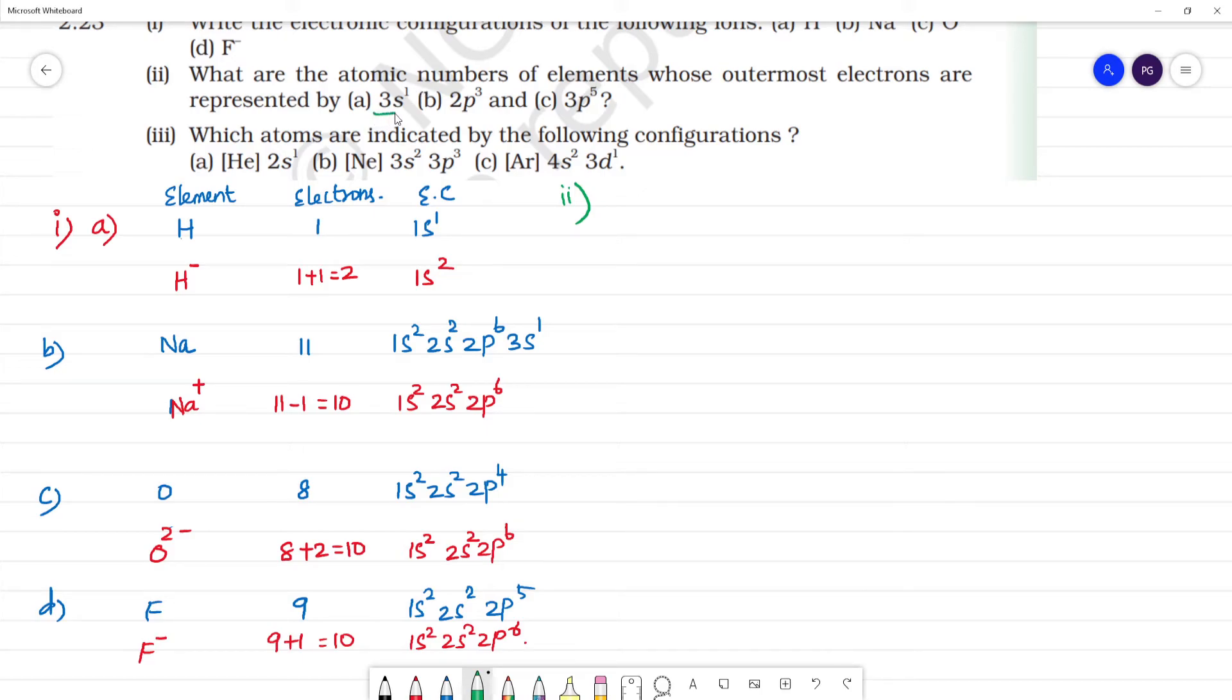For 3s1, we fill up: 1s2, 2s2, 2p6, 3s1. Total number of electrons is 2 plus 2 plus 6 plus 1 equals 11 electrons. So atomic number is 11 and the atom is sodium. This is A.